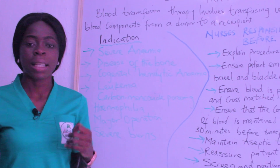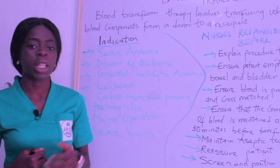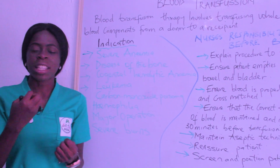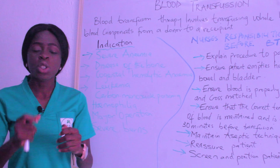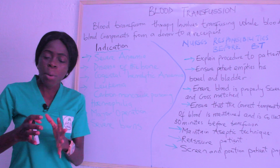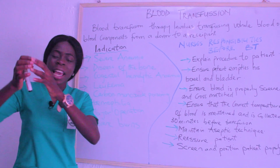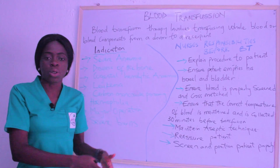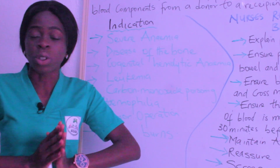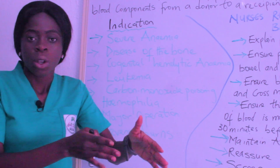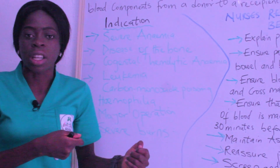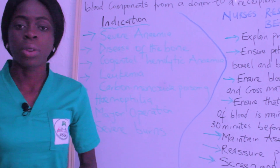Carbon monoxide poisoning is also an indication. When carbon monoxide enters the body, it decreases the oxygen level — the percentage of carbon monoxide increases while oxygen is reduced. Blood transfusion is carried out to ensure increased oxygen circulation, providing enough red blood cells to transport oxygen and remove carbon dioxide.